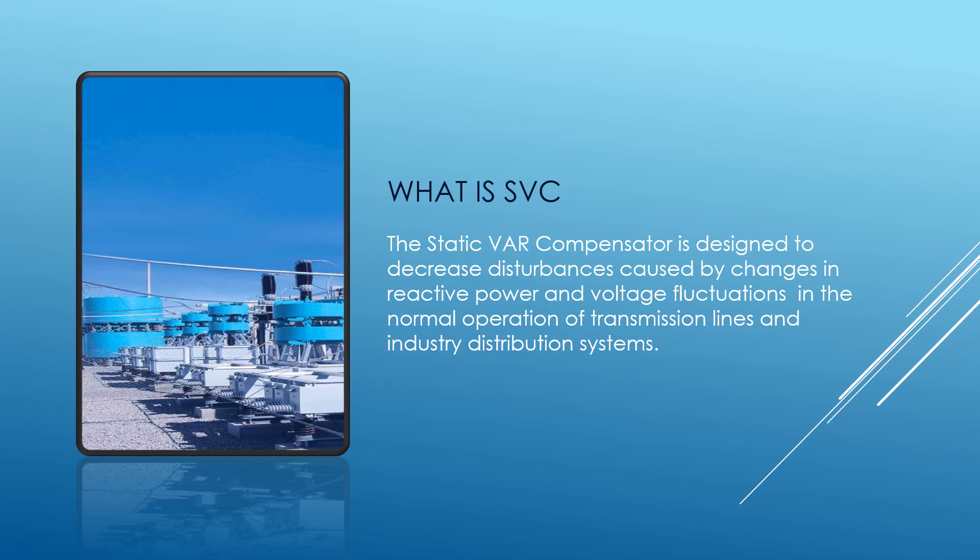So what is SVC? SVC is an electrical device designed to decrease disturbances caused by changes in reactive power and voltage fluctuations in the normal operation of transmission lines and industrial distribution systems. We need SVC because flickering lamps and TV sets are no longer accepted by domestic users, and poor quality power supply which derates expensive industrial machines is no longer accepted by commercial users.